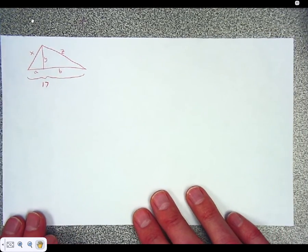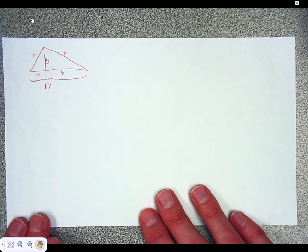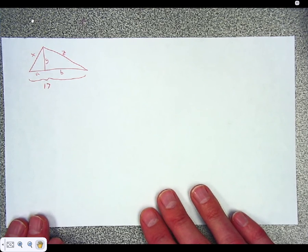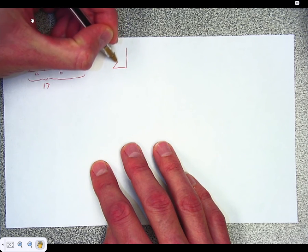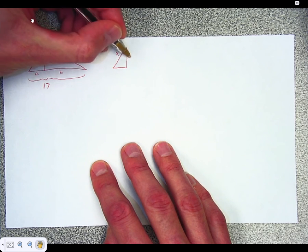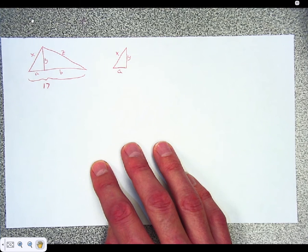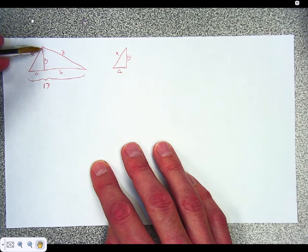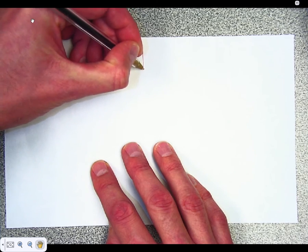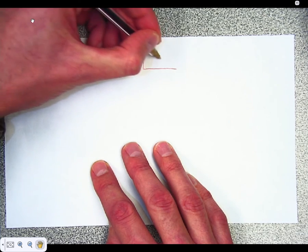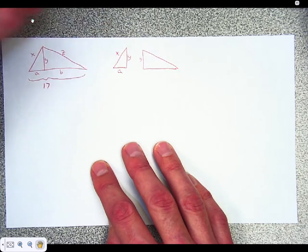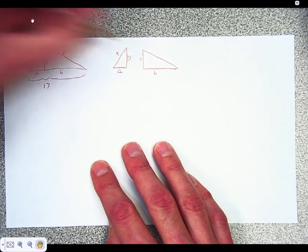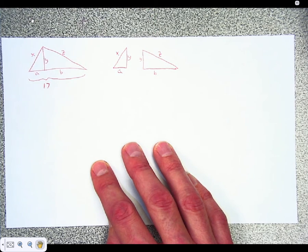I find this is a lot easier if I redraw the triangles. There are three triangles in this picture. There is the small triangle. X, Y, and A are the three sides of the small triangle. There's the medium triangle over here, so I'm going to redraw that. That's Y, B, and Z.